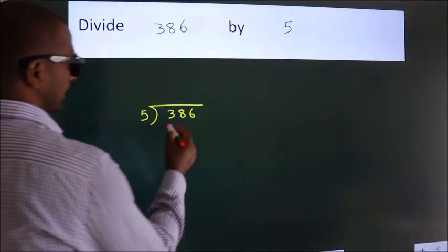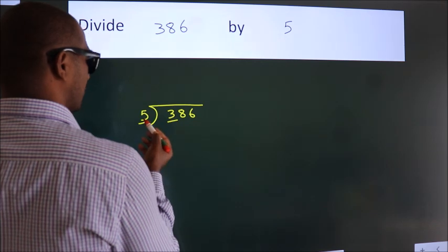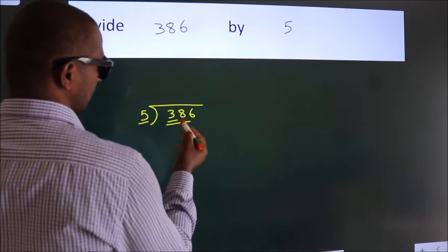Next, here we have 3, here 5. 3 is smaller than 5, so we should take 2 numbers: 38.